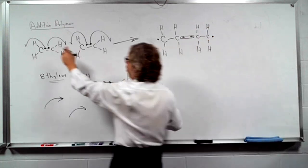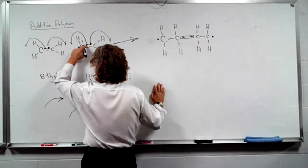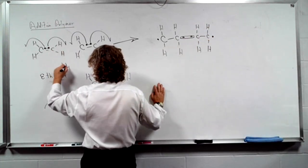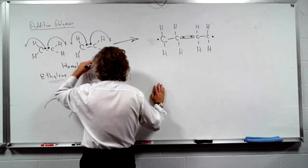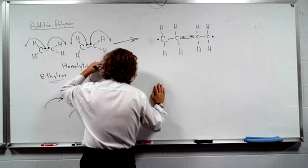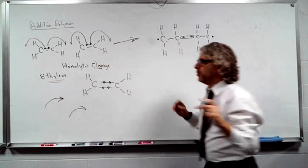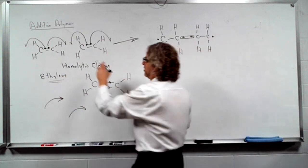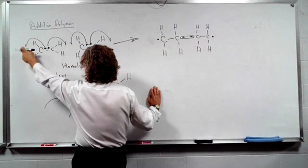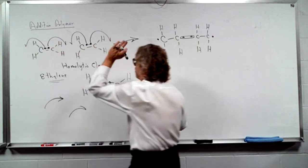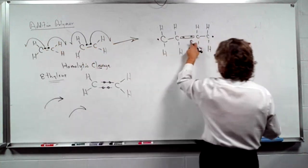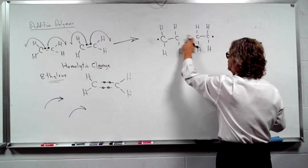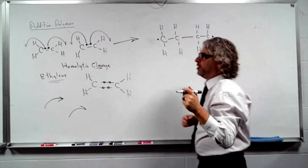If you had one electron go here, and one electron go here, this is called homolytic cleavage. If you have one go in one direction, and the other go in the other direction, when these two get into the center, they make a bond.